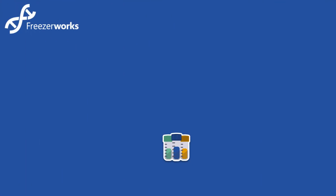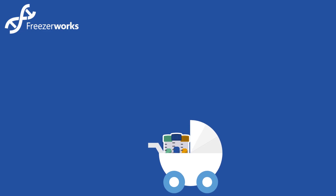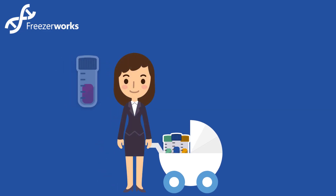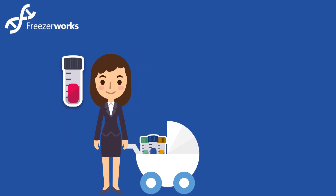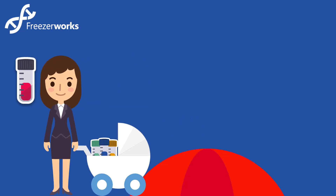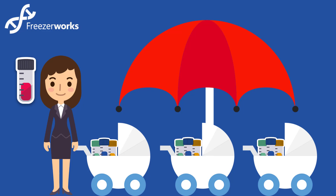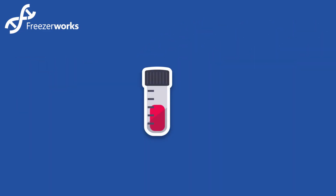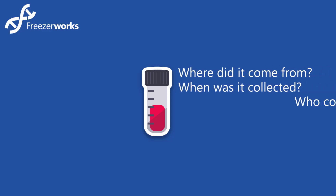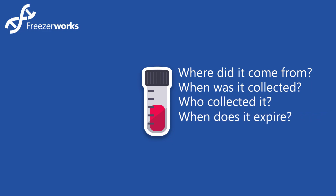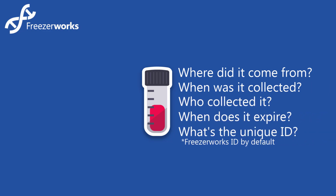The aliquot is also a child record, and every child has a parent, which is where the samples come in. Even if you're storing one aliquot, the samples act as umbrellas for the many different aliquots that can be made from them. Say you receive a blood or tissue specimen — in Freezerworks, you start by creating a sample. You enter information about where the specimen came from, when it was collected, who it was collected by, when it expires, and a unique ID, for example — all as a single sample record.